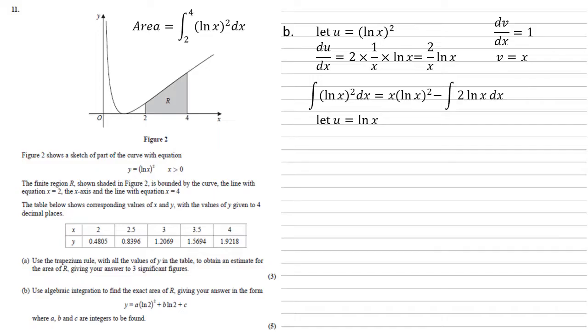So by parts, let u equal ln x, so I've chosen this because it's one that's easy to differentiate, and let dv by dx equal the 2 that's in there. So du by dx equals 1 over x, just the result that we know, and v is equal to 2x.